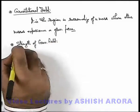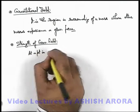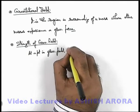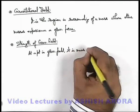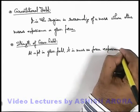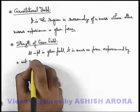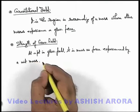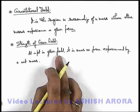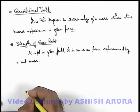When we talk about the strength of gravitational field, we can simply write that at a point in a gravitational field, it is measured as the force experienced by a unit mass, or we can write it as force per unit mass. This is termed as the strength of gravitational field.